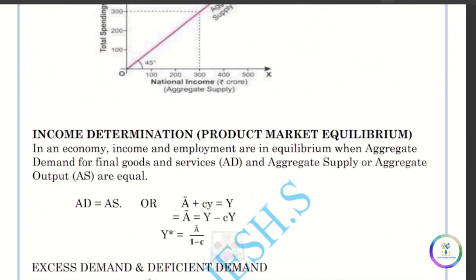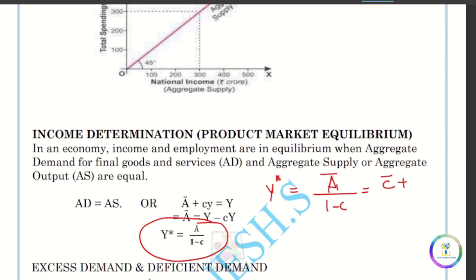The last topic is the equilibrium income equation: Y equals Ā divided by (1 minus c), where Ā equals C-bar plus I-bar. This is the equilibrium equation.